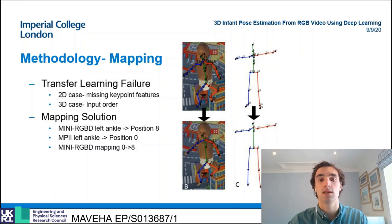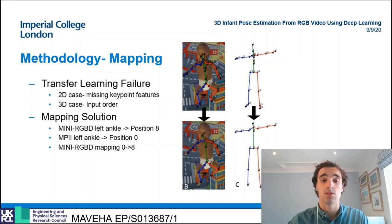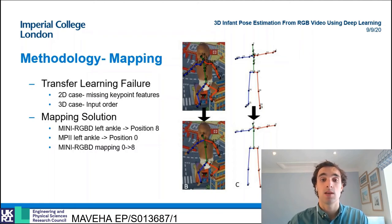For the 3D lifting network the degradation was found to be much greater. This is because the order that the key points are inputted to the model determines the mapping the network learns. This order changed between the adult and the infant datasets, and so the functional relationship between the inputs had to be completely relearned, resulting in little to no benefit from pre-training.